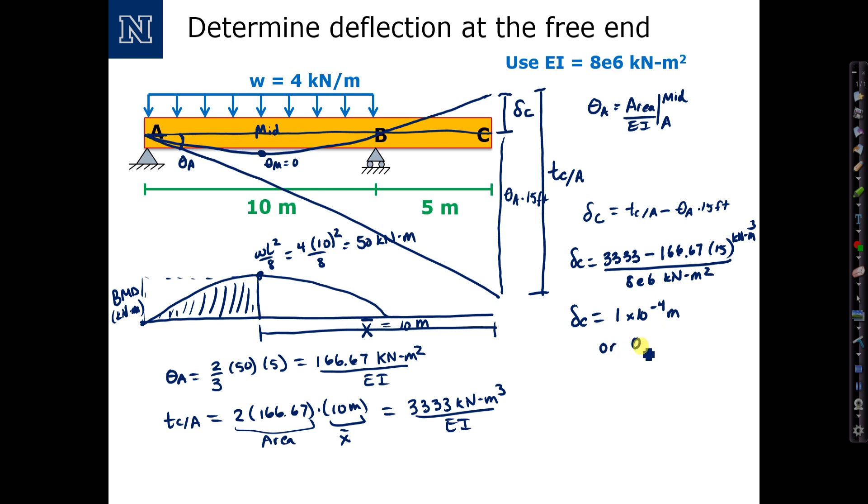We have delta C equals 1 times 10 to the negative 4th meters, or approximately 0.1 millimeters, which is a small deflection but reasonable for a large beam, and that concludes this example.